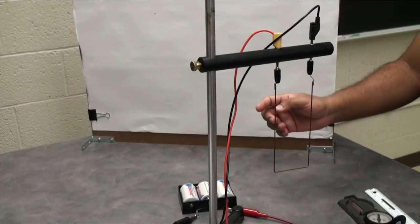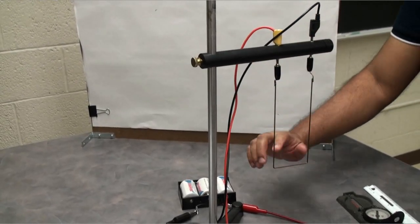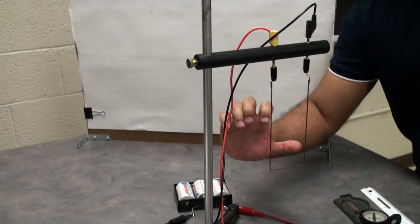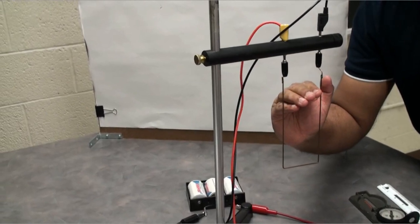So what happened here guys? Current flows from red to black, which means in this direction. So if I put my thumb in the direction of the current, you can see inside the other four fingers point outward, right?